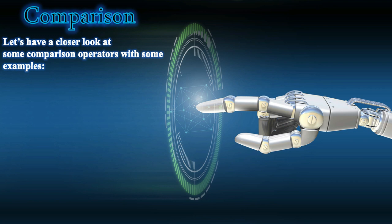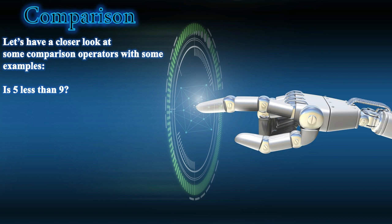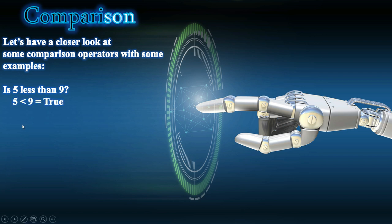Let's look at some comparison operators with examples. Is 5 less than 9? If this statement is true, the answer will be true, or 1 in binary. If the answer is false, the logical value will be false, or 0 in binary. So: 5 < 9 equals true. This statement is true.